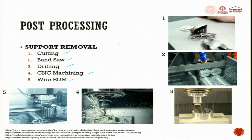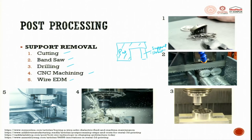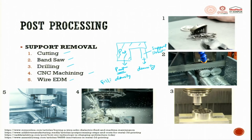Why do we have supporting structures? A part may be free-hanging, so you have a support structure beneath it. You can do band sawing, drilling, CNC milling, and wire EDM to remove those support materials. You can use the same material or a different material for supports - generally we use the same material but with completely different filling density. The part will have higher filling density while the support will have lower density, so it can be chipped off or removed very easily.